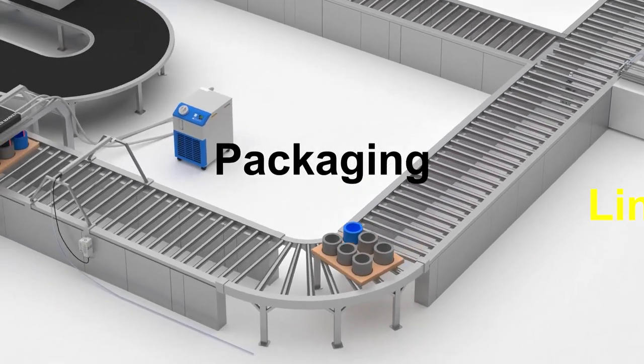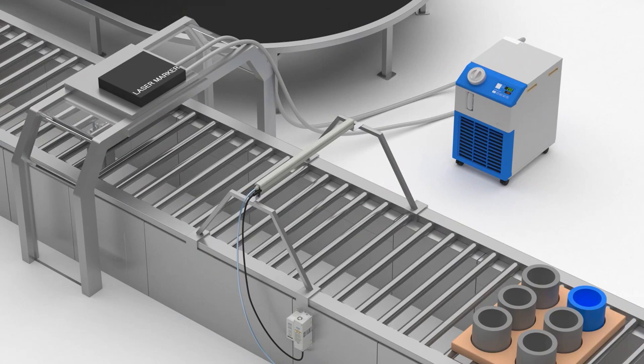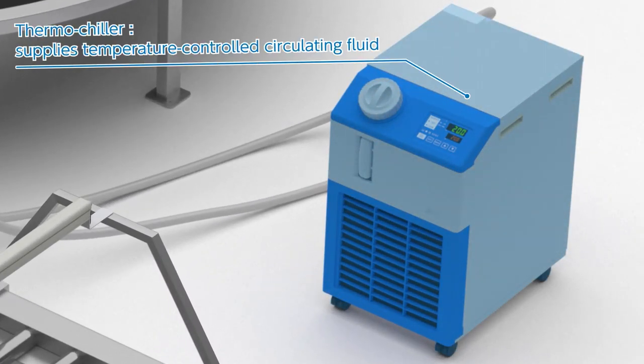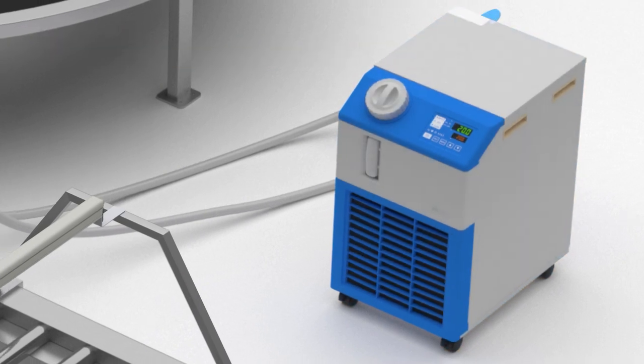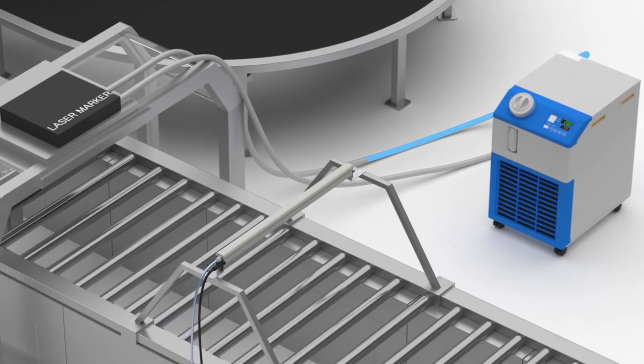The workpieces that are distributed to the second packaging line will be laser marked. A thermochiller controls the temperature of the circulating cooling fluid for the laser. After the circulating fluid discharged from the thermochiller has been heated by the laser, it returns to the thermochiller, and the circulating fluid is controlled to remain at a set temperature by the refrigeration circuit.